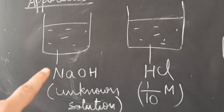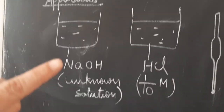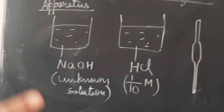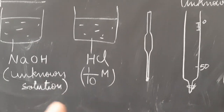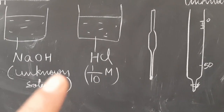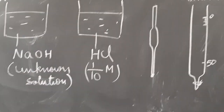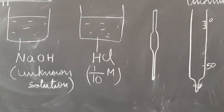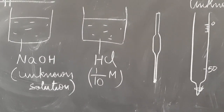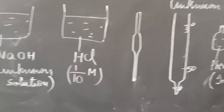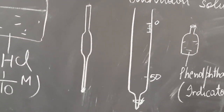Quantitative analysis is volumetric analysis where we are given an unknown solution. Here we have a sodium hydroxide solution which is unknown — meaning we do not know its molarity or concentration. This HCl solution is 1/10 or 0.1 molar; this is a known solution or a standard solution. A standard solution is one whose concentration is known.